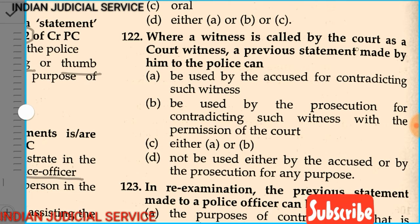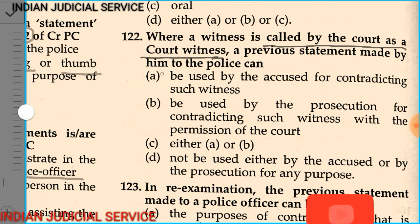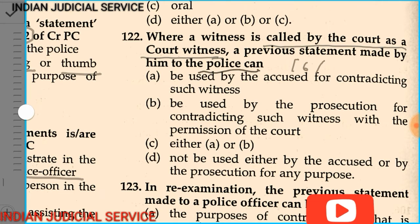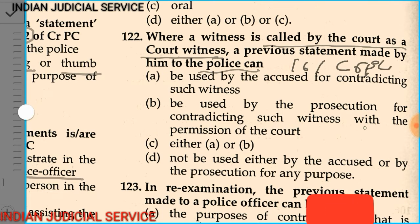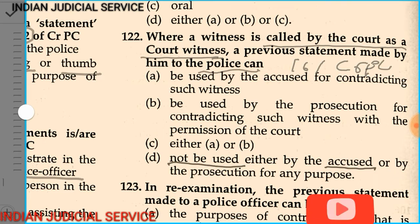Question number 122: Where the witness is called by the court as a court witness, the previous statement made by him to the police can: Option A — be used by the accused for contradicting such witness; Option B — be used by the prosecution for contradicting such witness with the permission of court; Option C — either A or B; Option D — not to be used either by the accused or by the prosecution for any purpose. Since the witness is called by the court, the answer is Option D.